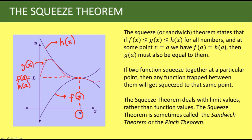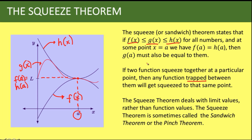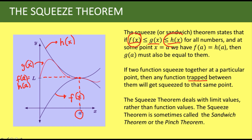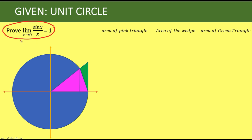Then our conclusion is that the value of the middle function at a, denoted by g of a, must be equal to these two functions that sandwich it. That is, if two functions are squeezed together at a particular point, then any function trapped between them will get squeezed to the same point. So the function at the top and the function at the bottom both go to this point, and the red middle function is squeezed by h of x and f of x. That's the idea behind the squeeze theorem, and it is very important in order to prove that the limit of sine of x over x as x approaches 0 equals 1.